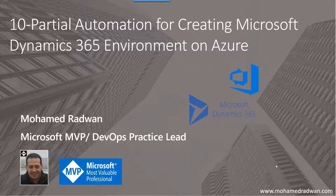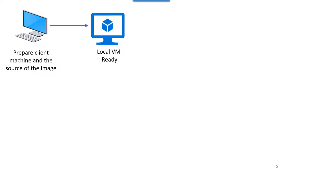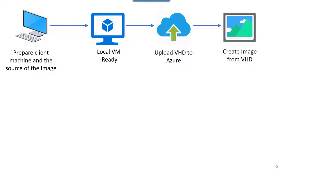In this video we are going to continue our series for DevOps for Dynamics. We will explain the steps for partial automation for creating a Microsoft Dynamics 365 environment on Azure, covering preparing the client machine by installing Azure PowerShell to connect to the Azure subscription, creating a local VM, uploading the VM to Azure, and creating an image from the VHD stored on a storage account on Azure.